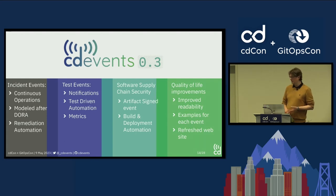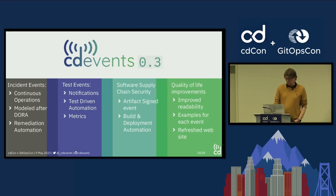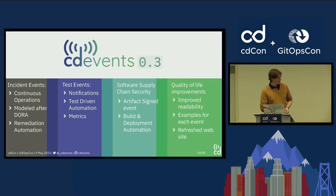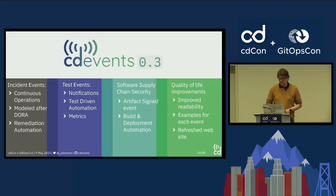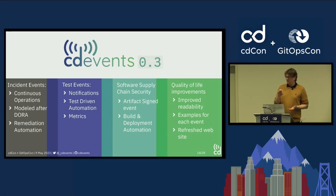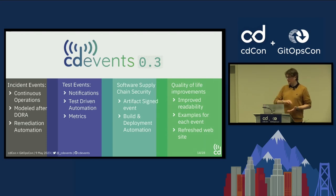We also had new contributors from the TestCube project, who contributed a revamp of the test events, which can be used for test-related automation. We introduced events in the area of software supply chain security for artifact signing. The idea is that if you're building a container image and signing it — like with cosign or Tekton Chains — you can send an event when the signature is produced so you can react to it. For instance, in Tekton we sign our releases and want to produce release notes and publish the release only once all artifacts are signed.